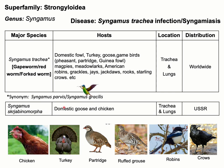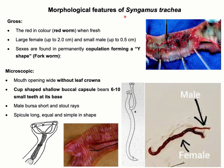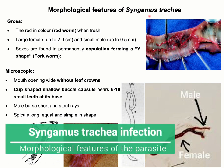There is another parasite of domestic goose and chicken under the same genus, Syngamus trachea, whose distribution is in the former Union of Soviet Socialist Republics. The disease caused by this parasite is called Syngamus trachea infection or Syngamiasis.